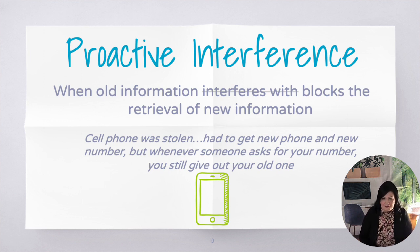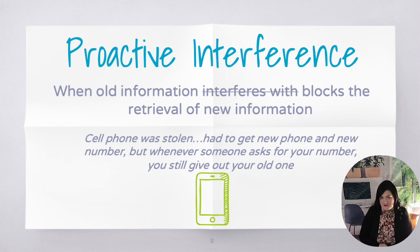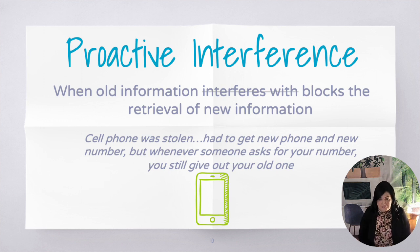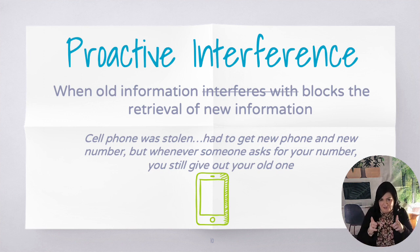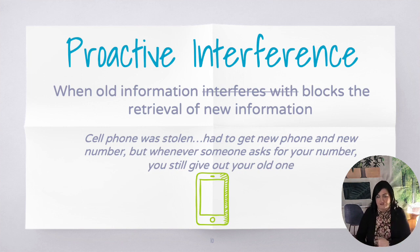Here's an example to solidify proactive interference: let's say your cell phone was stolen and you had to get a new one with a new phone number. Every time somebody asks you for your new number, you keep giving out your old one. You're trying to give out your new phone number, but you keep starting to say your old one. That's proactive interference — the old phone number is interfering with the learning of the new.